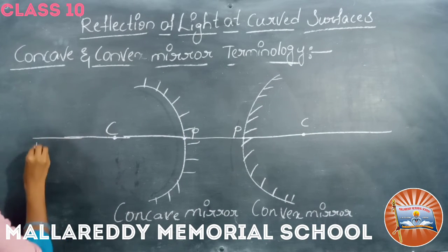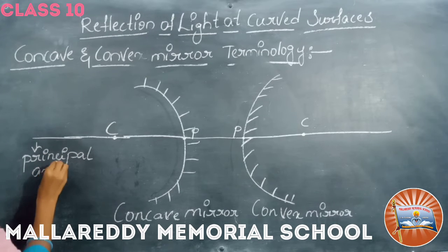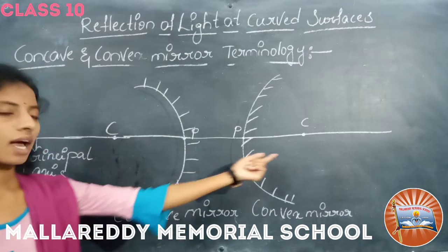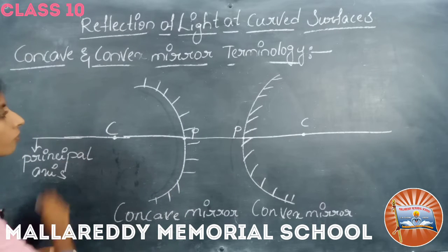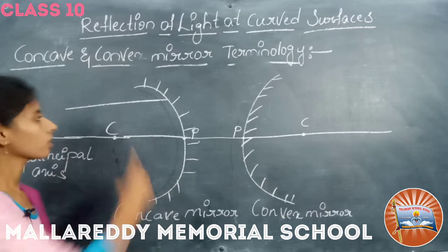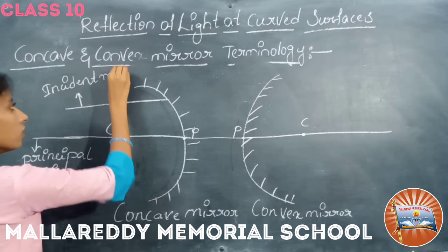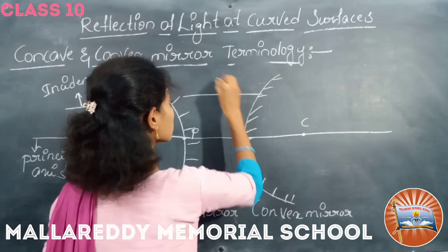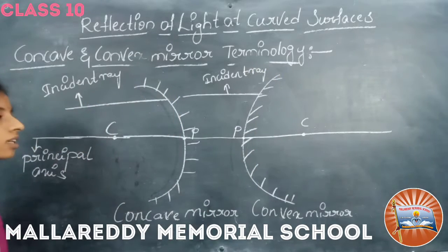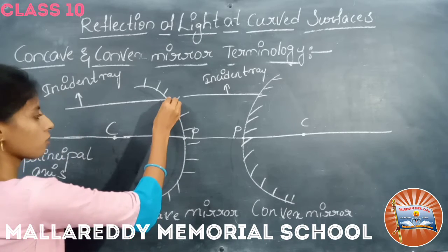So this is the principal axis — an imaginary line passing through the center of curvature and the pole of the mirror. The light falling on the mirror is represented as the incident ray, and the ray reflected from the spherical mirror is known as the reflected ray.